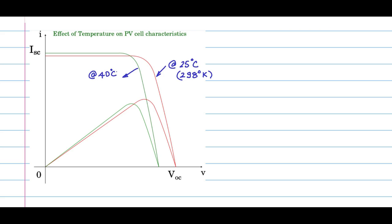Now we know from the data sheet the open circuit voltages and the short circuit currents at standard temperature and insolation. Voc is given as 36.72 volts and Isc is given as 8.99 amps, all from the data sheet. We need to find what Voc and Isc are at the 40 degree curve.